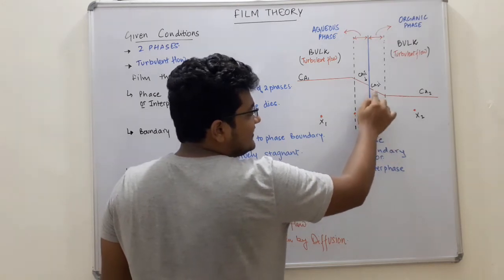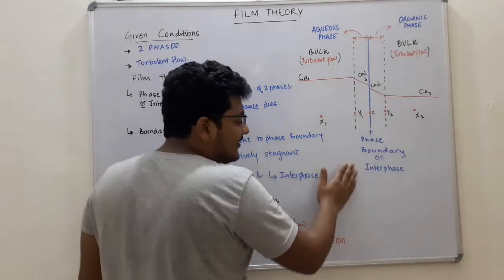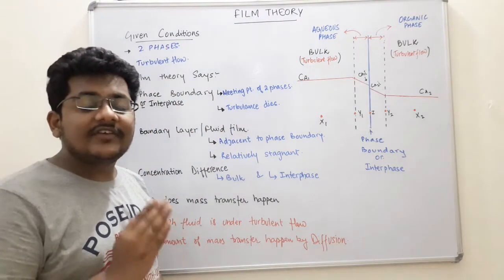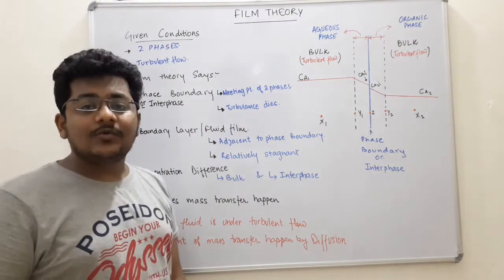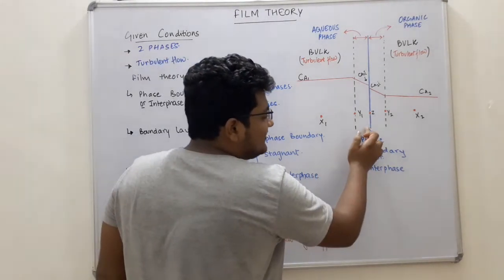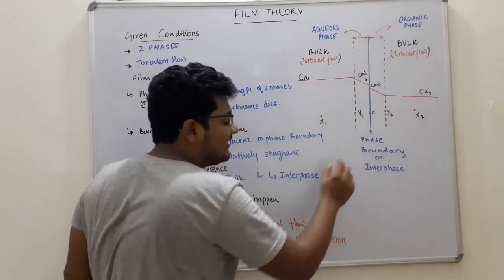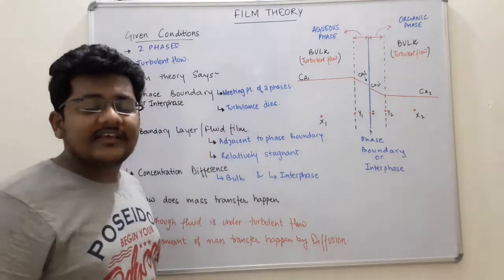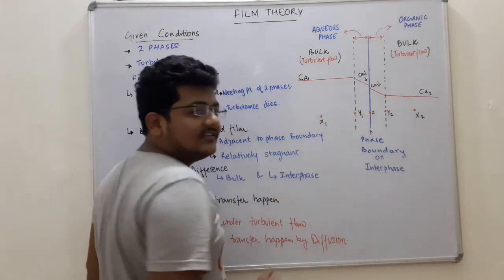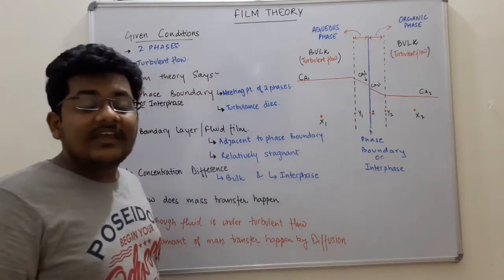We see that the phase boundary itself is in equilibrium. This means that if we want to transfer material just across the phase boundary — just across this line — it will not give any resistance. There is no resistance to transferring material just across this line because the phase boundary is under equilibrium.